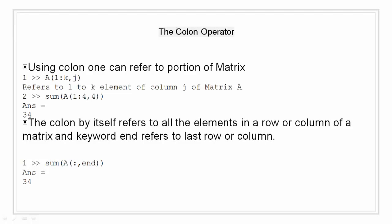Using colon, we can also refer to some portion of a matrix. For example, A(1:k,j) refers to elements 1 to k of column j of matrix A. Thus, if I have to sum the matrix from 1st to 4th element of column 4, I will write sum(A(1:4,4)) and I get answer as 34. However, there is a better way to perform this computation. The colon by itself refers to all the elements in a row or column of a matrix and the keyword end refers to the last row or column. Thus, the equivalent statement is sum(A(:,end)), which also gets an answer of 34.